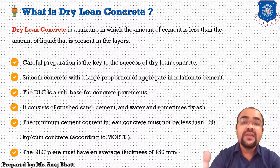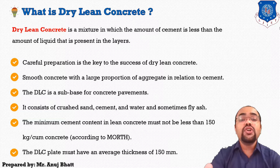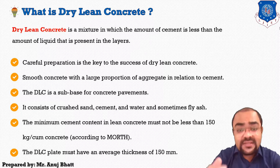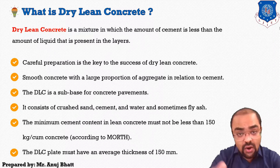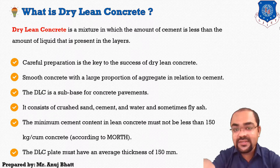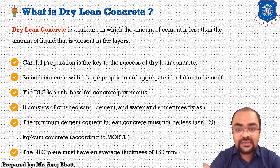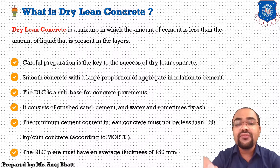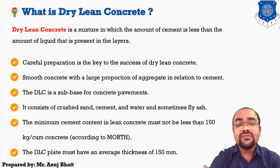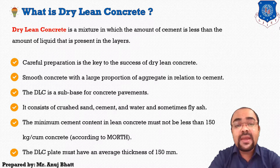Dry lean concrete consists of crushed sand, cement, water, and sometimes fly ash. Dry lean concrete is used as a sub-base for the concrete pavement.